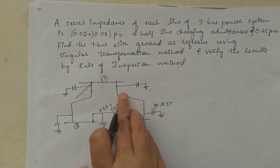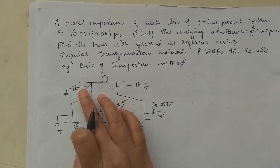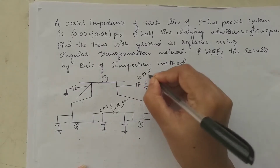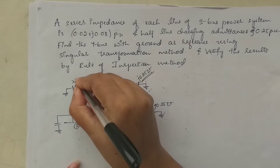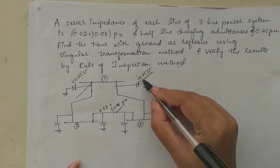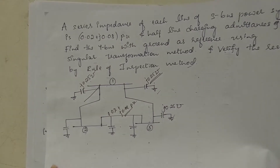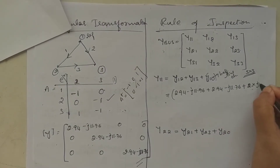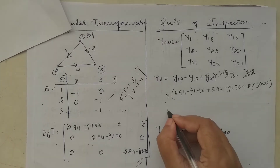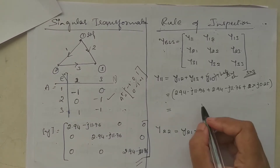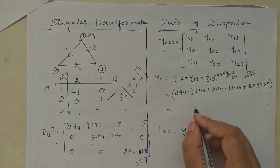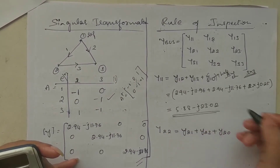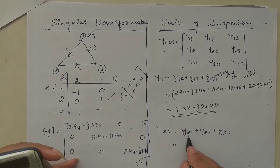Looking at the diagram, there are two half-line charging admittances connected to node one, each with value j0.25. So Y10 = j0.25 + j0.25 = j0.5. Adding all terms together: Y11 = (2.94 - j11.76) + (2.94 - j11.76) + j0.5, which gives Y11 = 5.88 - j23.02.